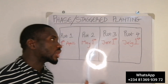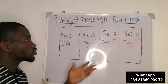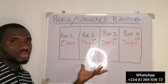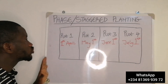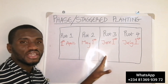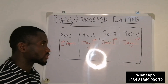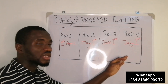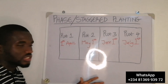For example, you are a maize farmer. You have 20 acres of land. So instead of going ahead and planting the whole 20 acres at the same time, you divide the 20 acres into four plots — five acres, five acres, five acres, five acres — everything making 20 acres.